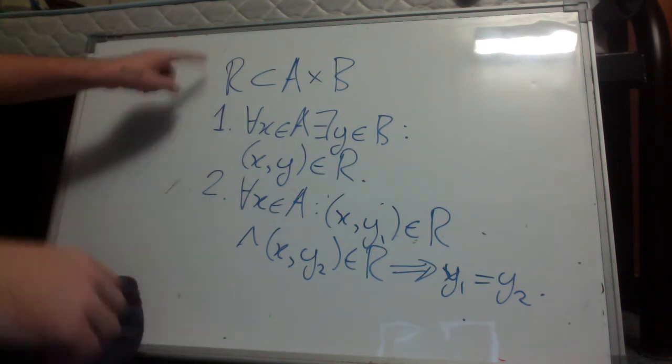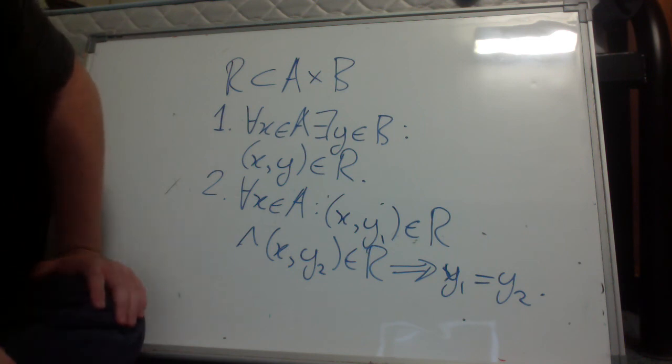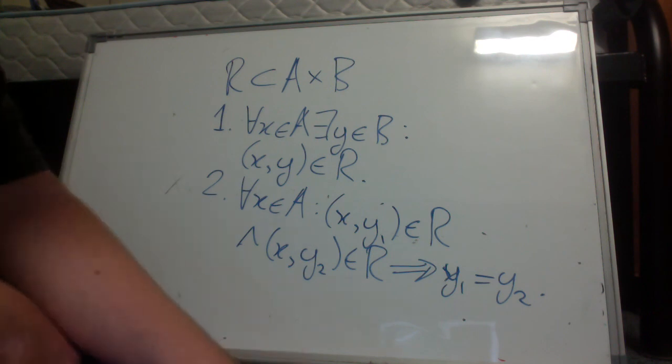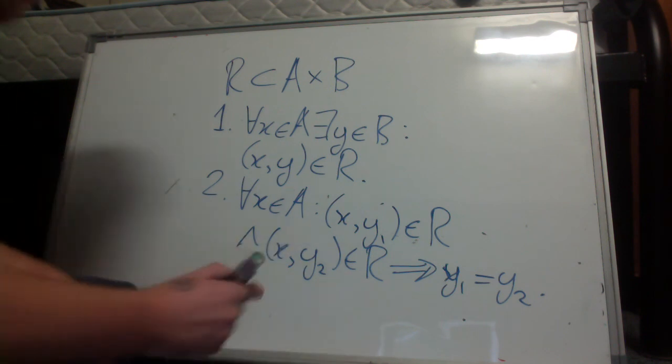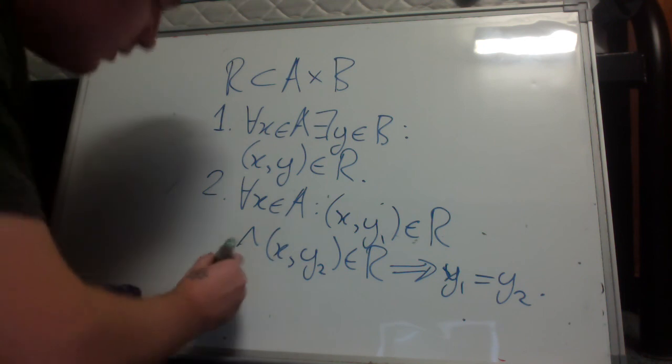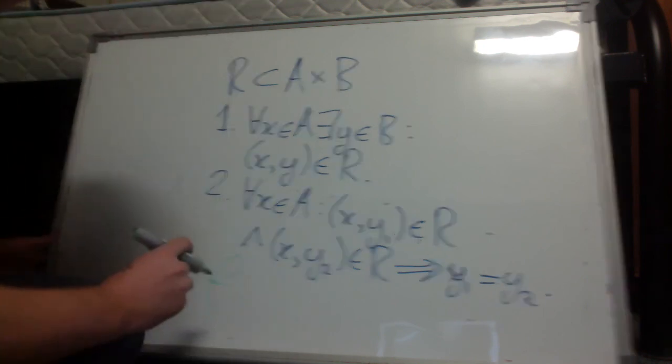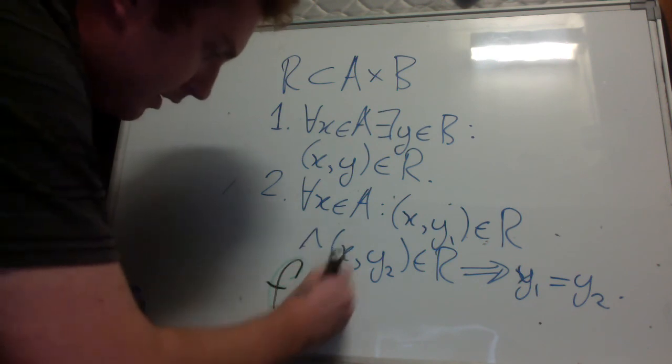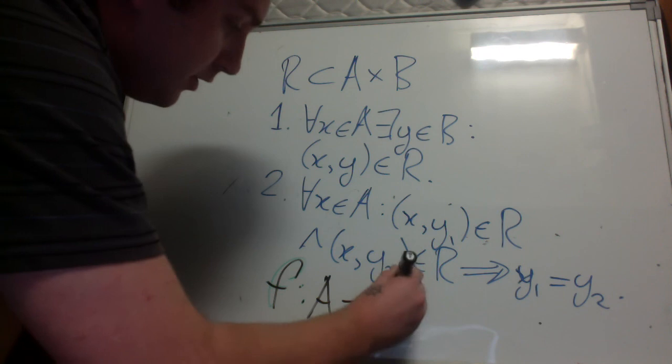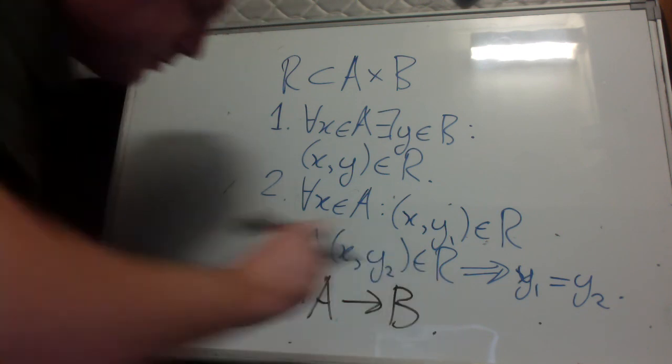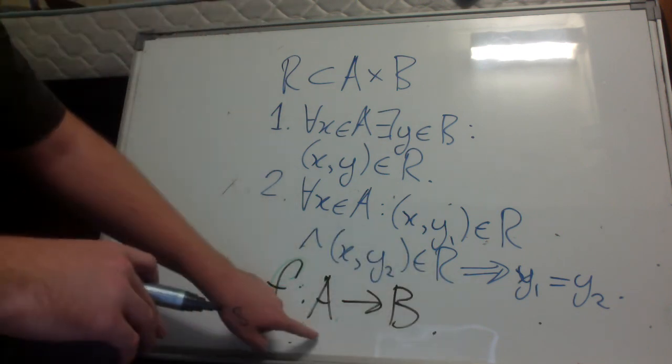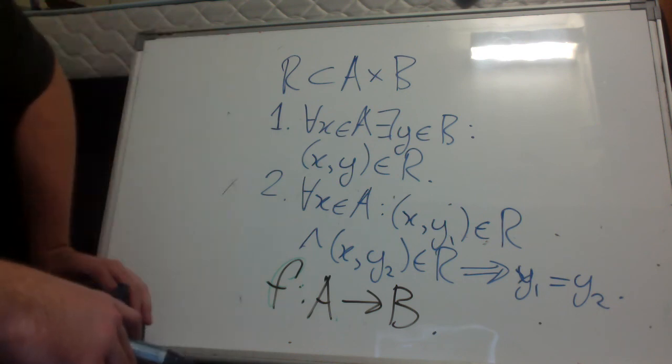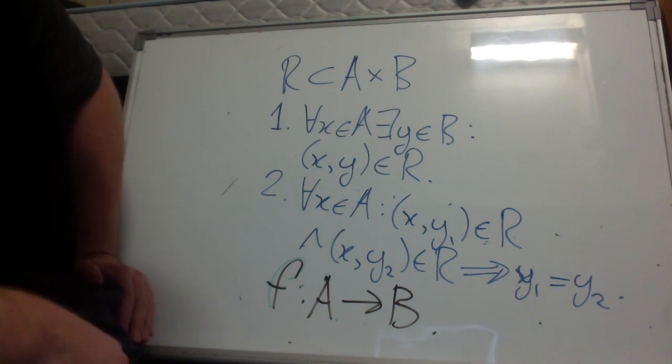So these properties completely characterize a function. So we have a new notation for functions. We write f is a mapping from a to b. So this means that f is a function. So f satisfies these properties. And that's the set theoretic definition of a function.